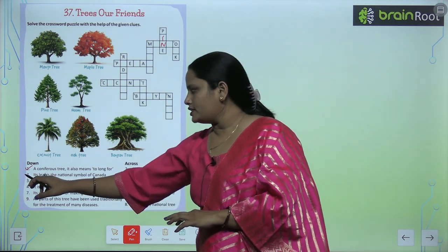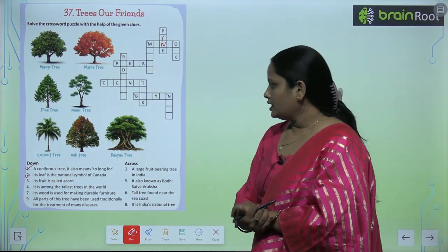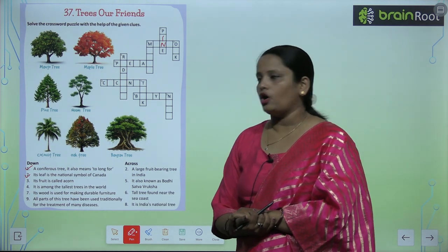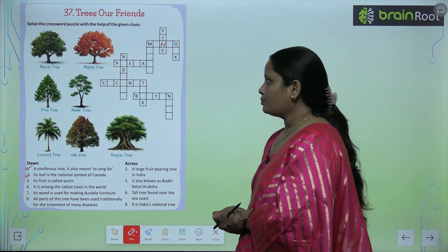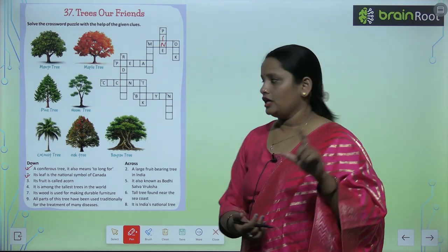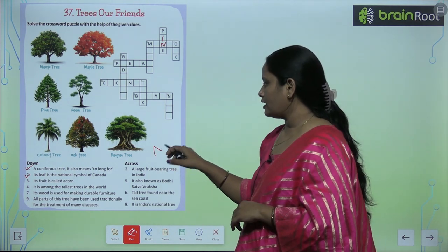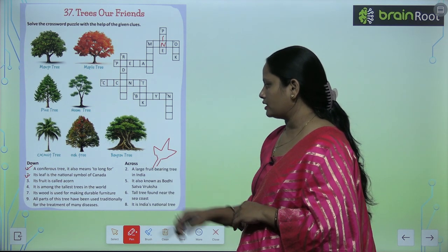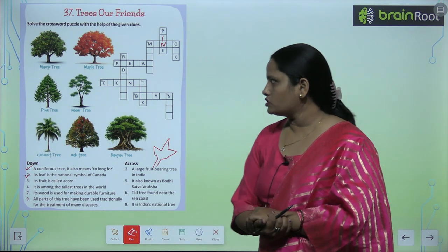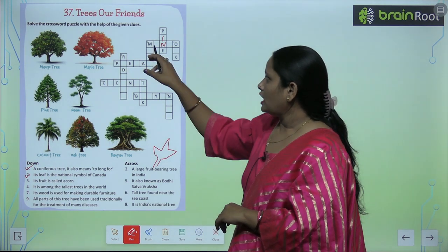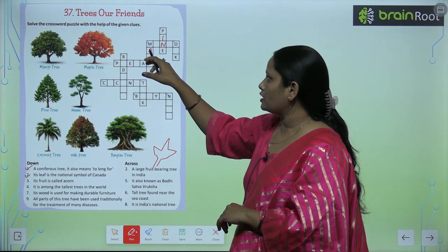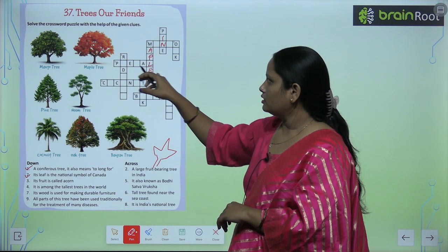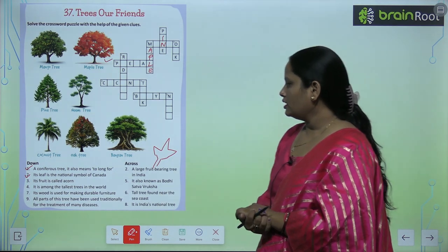The second one: its leaf is the national symbol of Canada. So this tree is the national symbol of Canada.